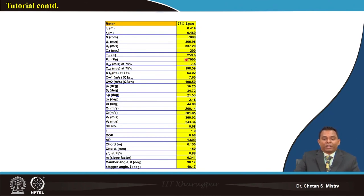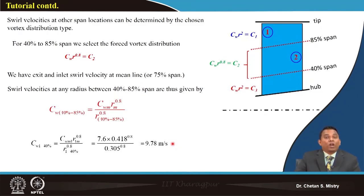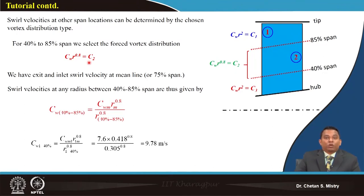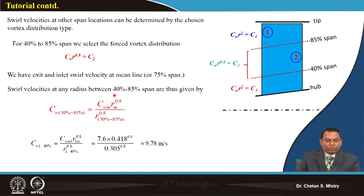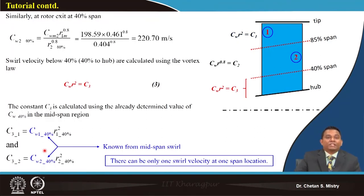The next step is distributing the whirl components across the span. From 40 to 85 percent span, Cw·r^0.8 = C2 (constant), calculated using the 75 percent span result. At 40 percent span, Cw1 is 9.78 m/s and Cw2 is 220.70 m/s.